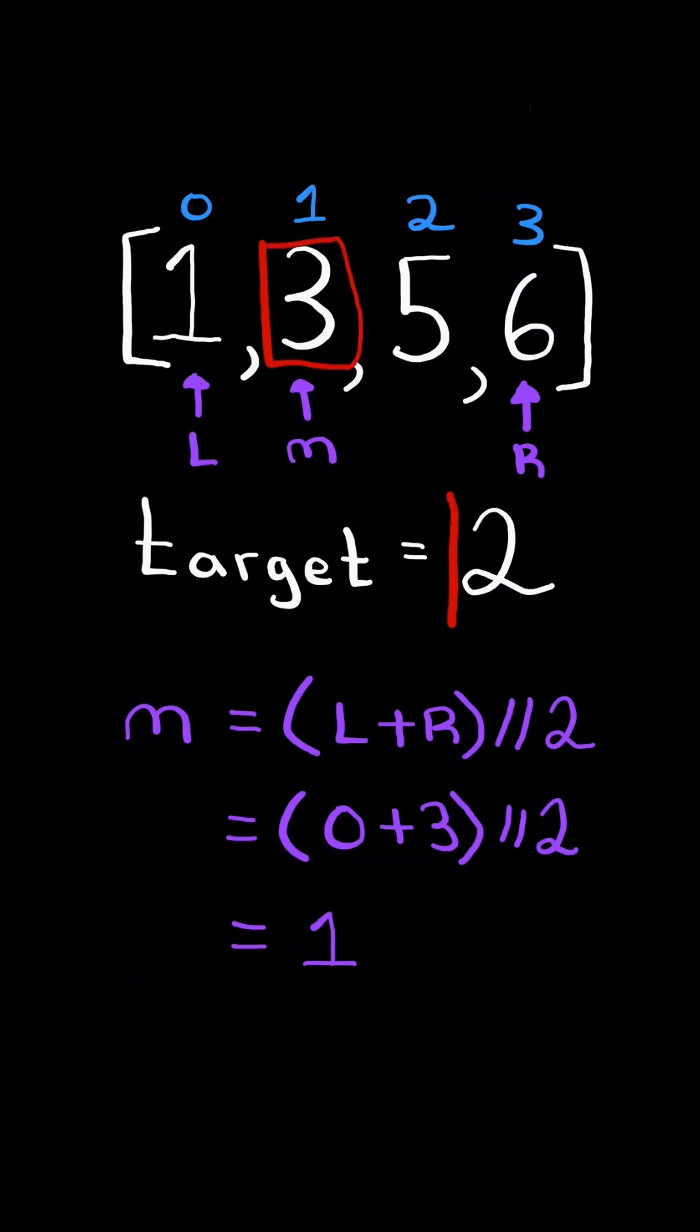If the number at mid is greater than target, we know target cannot appear to the right of mid because all these numbers are greater, so we update R to mid minus 1 and continue the algorithm.